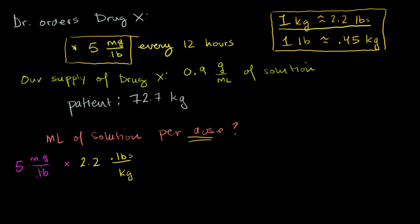Once you do enough practice, you won't have to pay too much attention to this. But at first, when you're getting started, just make sure the dimensions cancel out — pounds in the numerator, pounds in the denominator. So we multiply 5 times 2.2: 5 times 2 is 10, 5 times 0.2 is 1, so this equals 11 milligrams per kilogram.